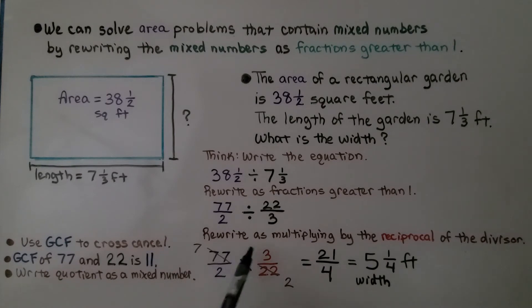Now we can do 7 times 3 is 21 and 2 times 2 is 4. We have 21 fourths. We think 21 divided by 4 is 5 and there's 1 fourth left over.